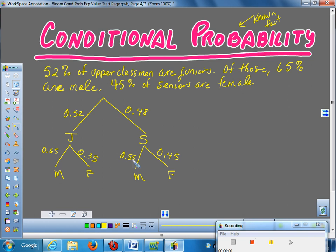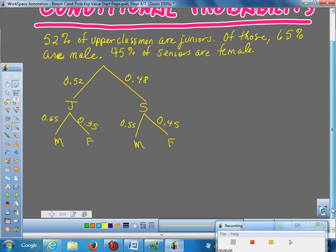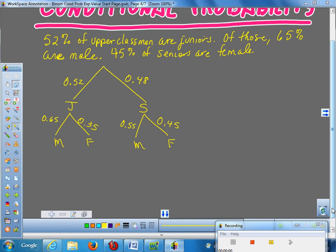That's a basic probability tree. I can now ask you tons of different kinds of questions about this tree. Suppose I say to you, what is the probability of selecting a senior male? I want you to learn to write this in symbols. This would be the probability of senior and male, P(S∩M). That means multiply.